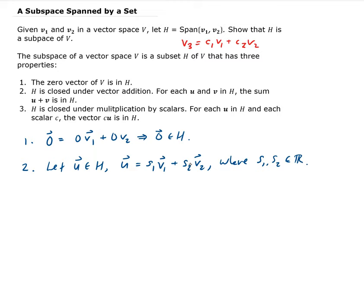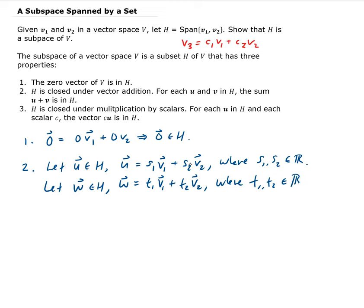Let's pick another vector W, also in H. Since W is in H, that vector W can be written as T1 times V1 plus T2 times V2, where T1 and T2 are real values. Now we have to add them together and show that the result is a linear combination of V1 and V2.